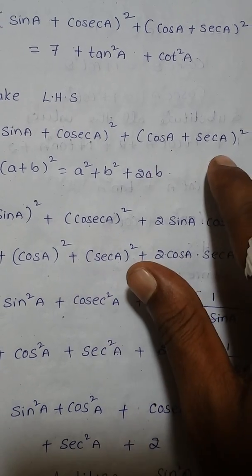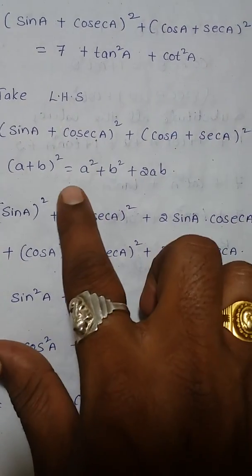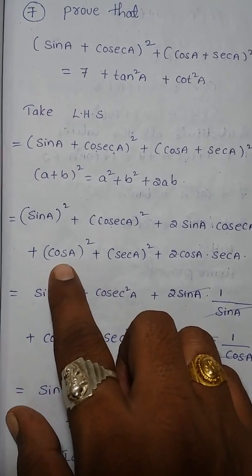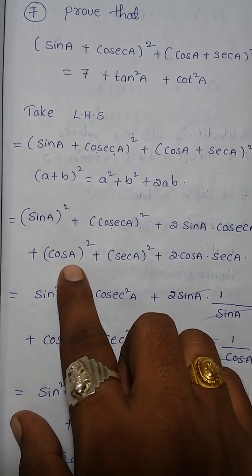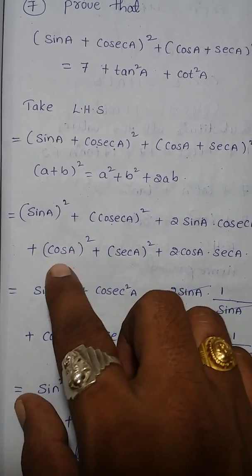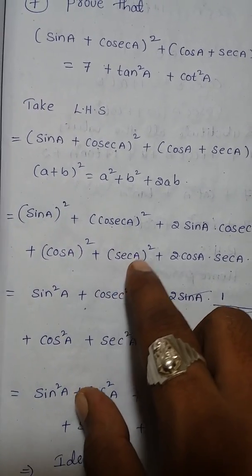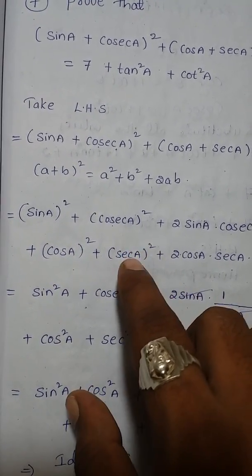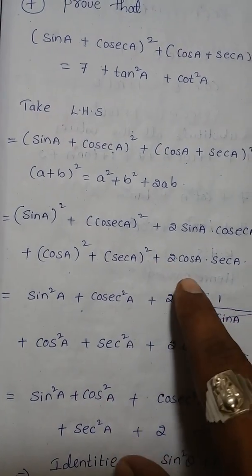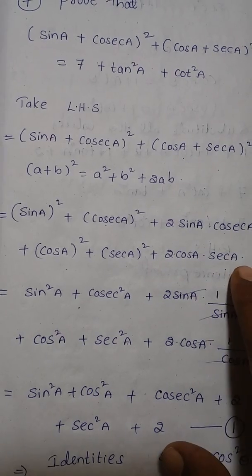Applying the same (a + b)² formula to (cos A + sec A)²: cos²A + sec²A + 2·cos A·sec A.